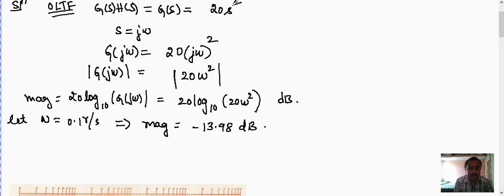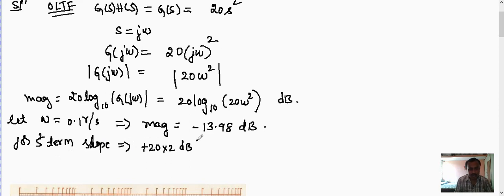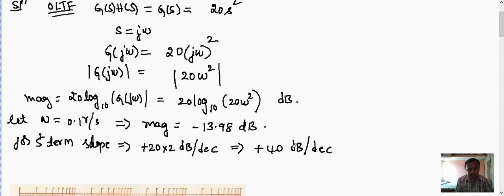For the s² term, what is the slope of the magnitude plot? The slope formula is ±20·m dB per decade, where m is the power of s. Here s² means m = 2, and since s is in the numerator it is positive, giving +20×2 = +40 dB per decade.